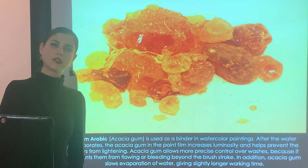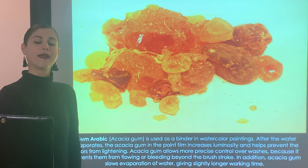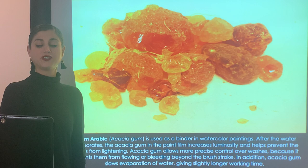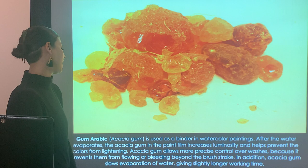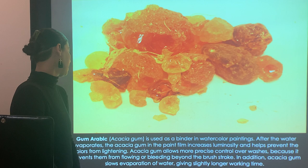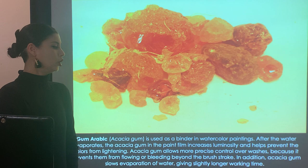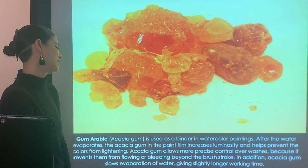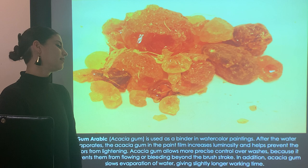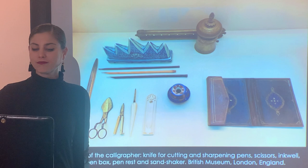Most of these miniature paintings use watercolor or wash. The binder in watercolor is gum arabic, made from the sap or resin of acacia trees. After water evaporates, the acacia gum in the paint film increases luminosity and helps prevent colors from lightening. Acacia gum also allows more precise control over washes because it prevents them from flowing or bleeding beyond the brush stroke — very important when working with miniature manuscript painting. It also slows evaporation of water, giving a slightly longer working time.